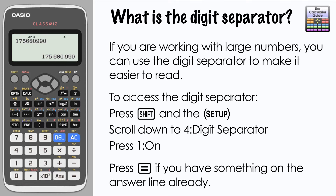What this has done is separated out every third digit on the larger number that we have displayed here, which in certain cases can make it easier for you to read. So we can establish that this is 175,680,990.